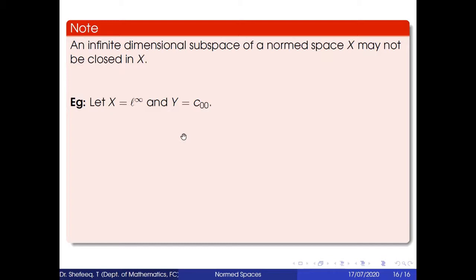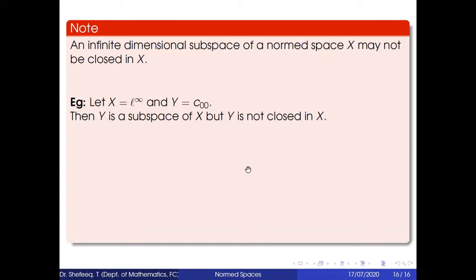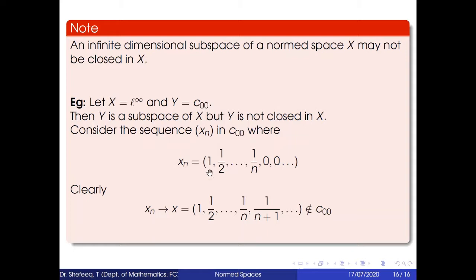Note: an infinite-dimensional subspace of a normed space X may not be closed in X. We have proved that a finite-dimensional subspace is complete, but infinite-dimensional ones need not be closed. For example, take X = ℓ∞ and Y = c₀₀ (sequences with finitely many nonzero terms). Then Y is a subspace of X but Y is not closed in X. Consider the sequence xₙ = (1, 1/2, ..., 1/n, 0, 0, ...) in c₀₀, which converges to x = (1, 1/2, ..., 1/n, ...) which does not belong to c₀₀. So c₀₀ is not closed in ℓ∞. Thank you.